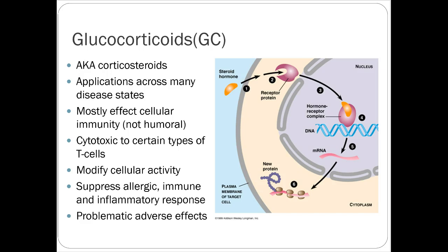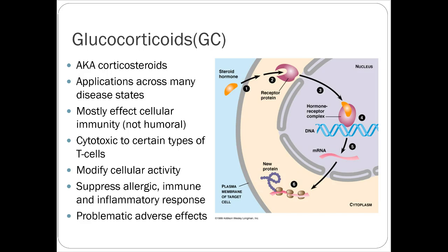About two weeks is the cutoff for when you start to see meaningful immune suppression — that's debatable but pretty close. Glucocorticoids — also called corticosteroids or just steroids — mostly affect cellular immunity by working on steroid hormone receptors intracellularly. They can be cytotoxic to certain types of T cells, modify cellular activity, and suppress allergic, immune, and inflammatory responses by preventing T cell and B cell production of inflammatory mediators.